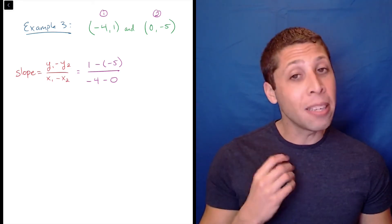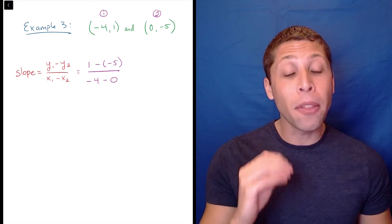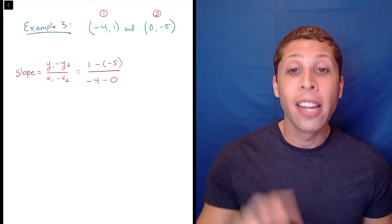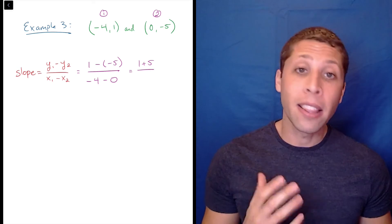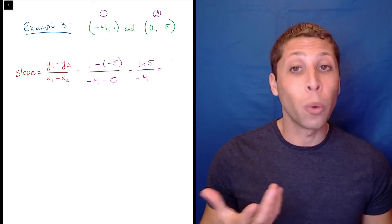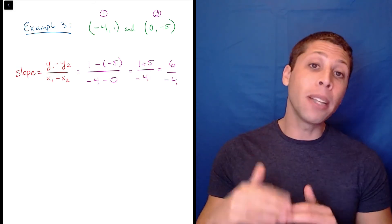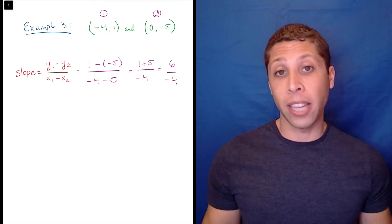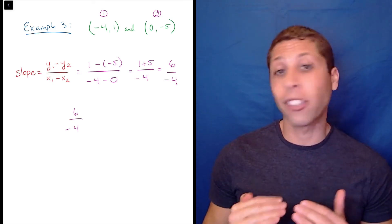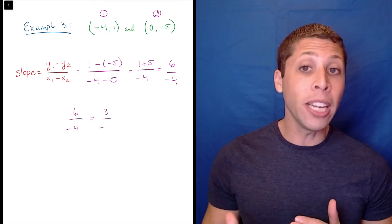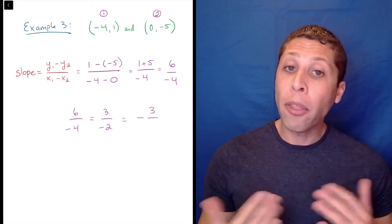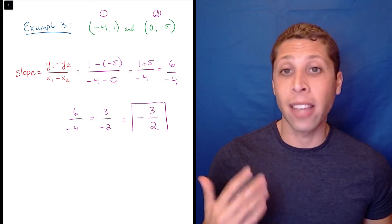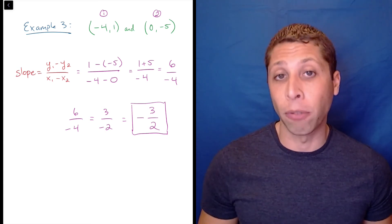Now I see much more clearly that the top of the fraction is 1 minus negative 5. Since two negatives make a positive, this becomes 1 plus 5, which is 6. On the bottom, negative 4 minus 0 is negative 4. Reduce the fraction as much as possible to get 3 over negative 2. And when there's only one negative, you can bring it out front to say that our slope is negative 3 over 2.